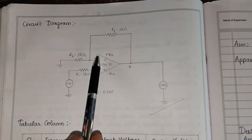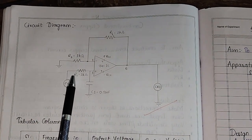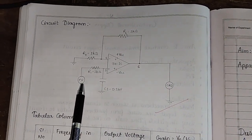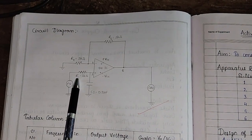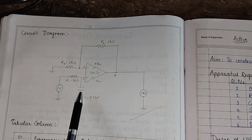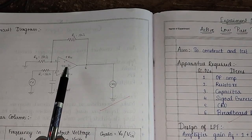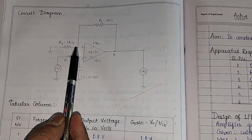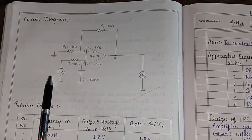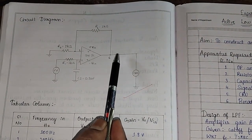It consists of IC741. At pin number 3 we can observe that a resistor R1 and capacitor C is connected, and we are giving the AC input signal from the function generator to pin number 3 through resistor R1. Both R and C form the low pass filter, and resistor R1 is connected to pin number 2, which is grounded. A feedback resistor RF is connected between pins 2 and 6. We give the input signal from the function generator and observe the AC waveform at pin number 6 using a CRO.